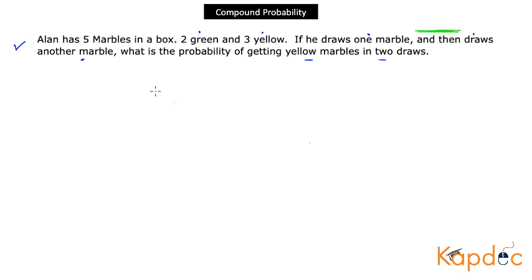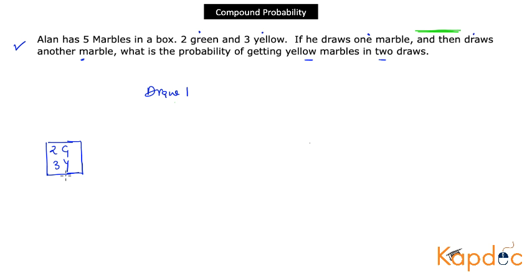Let's paint a picture of the entire process. On the first draw, the box contains two green and three yellow marbles — all possible marbles. When he picks one marble, the outcome will be either green or yellow, as those are the only two colors available.